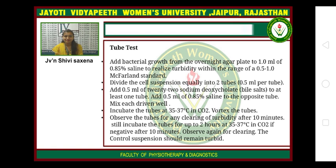Tube test procedure: Add bacterial growth from an overnight agar plate to 1.0 mL of 0.85% saline to achieve turbidity in the range of 0.5 to 1.0 McFarland standard. Divide the cell suspension equally into two tubes (0.5 mL per tube). Add 0.5 mL of 2% sodium deoxycholate to one tube, and 0.5 mL of 0.85% saline to the control tube. Mix each tube well. Incubate the tubes at 35°C to 37°C in CO2 and vortex the tubes. Observe the test tube for any clearing of turbidity.